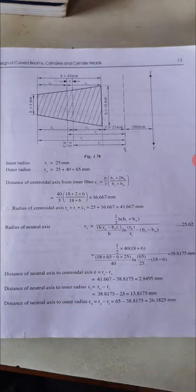Eccentricity E = RC - RN = 2.84mm. CI = RN - RI = 13.8175mm. CO = RO - RN = 26.1825mm.